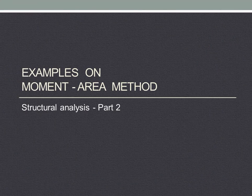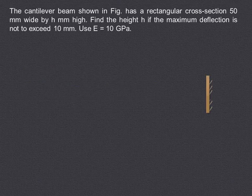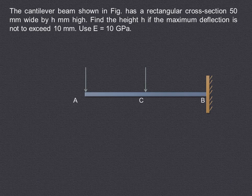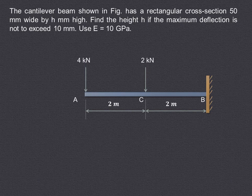In this video, we will try to understand how to solve examples of the moment area method. The cantilever beam shown here has a total span length of 4 meters and carries two point loads of 4 kN and 2 kN as shown. The cross section of this beam is rectangular, with a width of 50 mm and depth h mm. We have to find the value of height h if the maximum deflection is not to exceed 10 mm, and the modulus of elasticity E is given as 10 GPa.